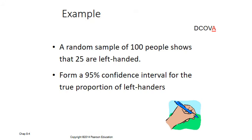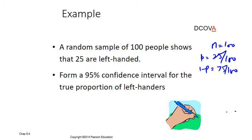Let's look at a simple example. A random sample of 100 people — so n equals 100 — shows that 25 are left-handed, so p is 25 over 100, which is 0.25, and 1 minus p is 75 over 100. We want to construct a 95% confidence interval, so Z alpha by 2 for 95% is 1.96.